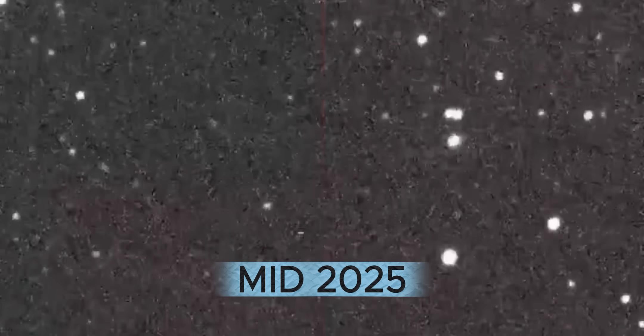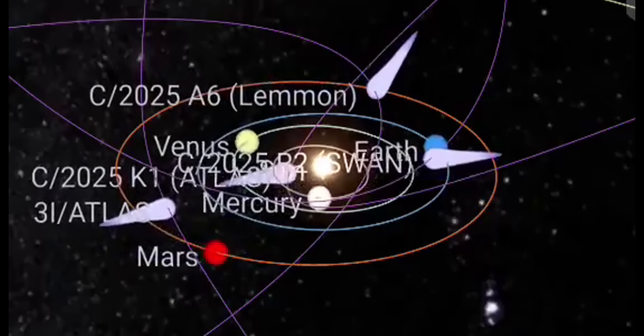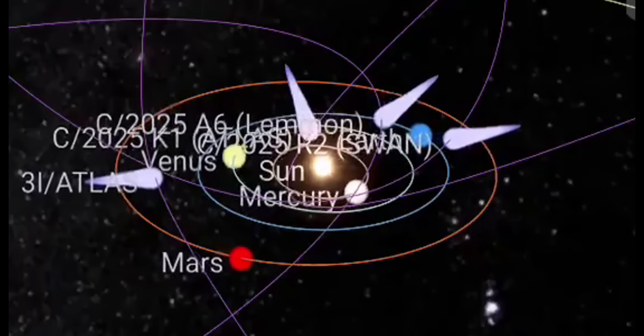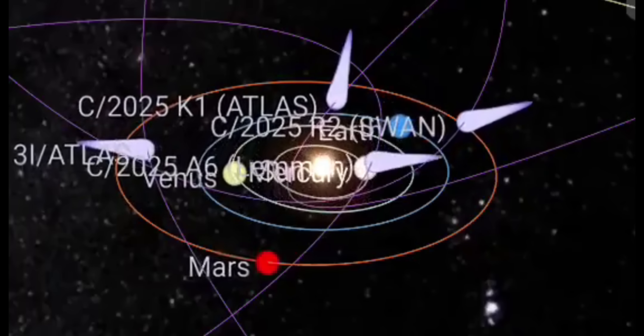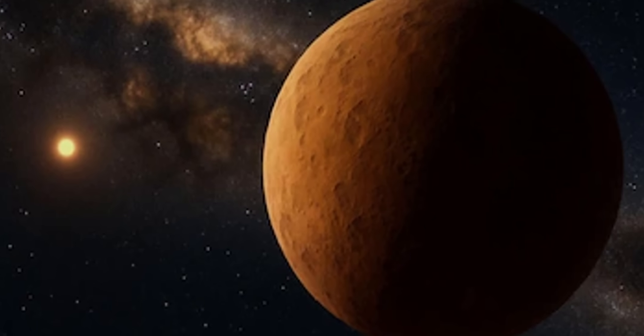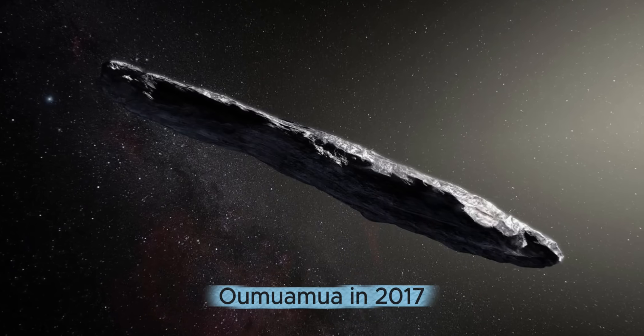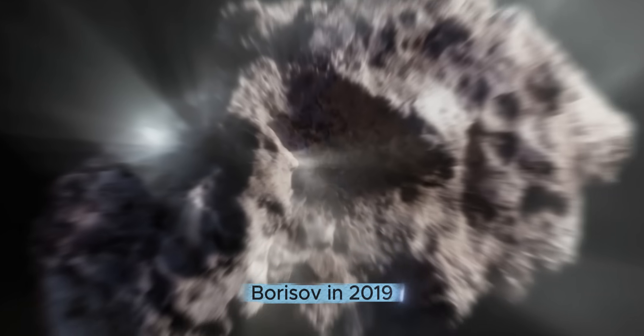Discovered in mid-2025 by the Atlas Survey Telescope in Chile, 3I Atlas instantly stood out. Its orbit was hyperbolic, proof that it came from beyond the sun's reach. That alone makes it only the third confirmed interstellar object ever seen by humans. First was Oumuamua in 2017, then Borisov in 2019.